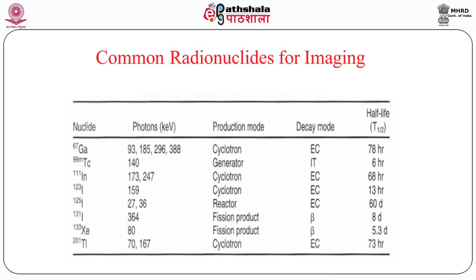If we see the common radionuclides for imaging, they are either cyclotron produced, generator produced, or reactor produced — and sometimes from fission products like gallium-67. Gallium-67 is produced in the cyclotron. Technetium comes from molybdenum via a generator. Cyclotrons also produce indium-111 and iodine-123, which is one of the best isotopes but requires cyclotron production. Different photons of different energies are produced, and their decay mechanism is either electron capture, isomeric transition, or beta decay.